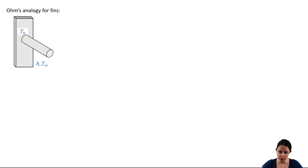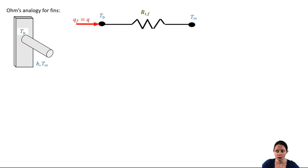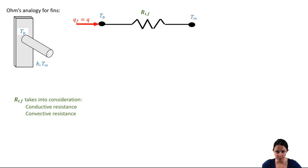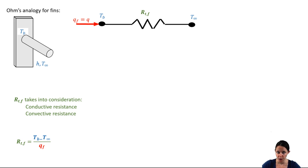Here we have a pin-fin of uniform cross-sectional area. The temperature at the base is Tb, and the rate of heat transfer through the fin to the convective fluid at T-infinity is Q. We could define a thermal resistance RTF, where T stands for thermal and F stands for fin. This thermal resistance takes into consideration the resistance to conduction along the fin axis as well as the resistance to convection. We can define this thermal resistance just as we did in chapters 3.1 and 3.3 — it equals the driving temperature gradient divided by the heat transfer rate.